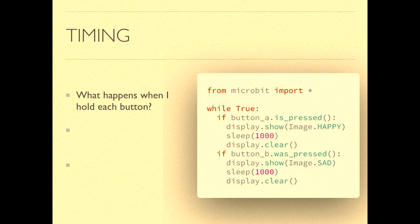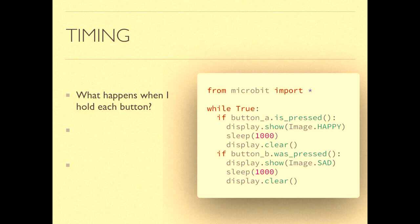If you hold down button A and go through this program, it's just like the happy face program before. It checks if button A is pressed, shows the happy face for a second — sleep counts in milliseconds — then clears it. So if you hold down A, it shows the happy face, waits a second, clears it, and then as far as a human can see, instantly puts the happy face back up again and you never see a difference.